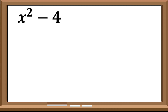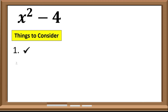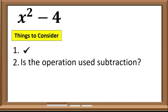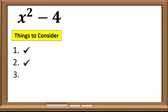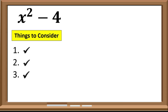x² − 4. Let us check first if this expression can be factored using difference of 2 squares. First, is it a binomial? Check. Second, is the operation used subtraction? Check. Third, are the terms perfect squares? Check. Since all conditions are met, we can use difference of 2 squares on this expression.